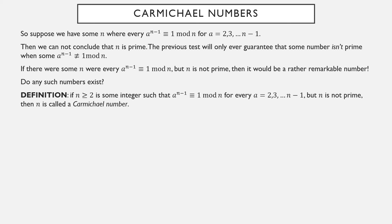If you have some number so that a to the n minus 1 is equivalent to 1 mod n for every choice of a from 2 through n minus 1, and n still fails to be prime, that's what's called a Carmichael number. Are there any Carmichael numbers? Yes, in fact, there's infinitely many. The smallest one, however, is 561.